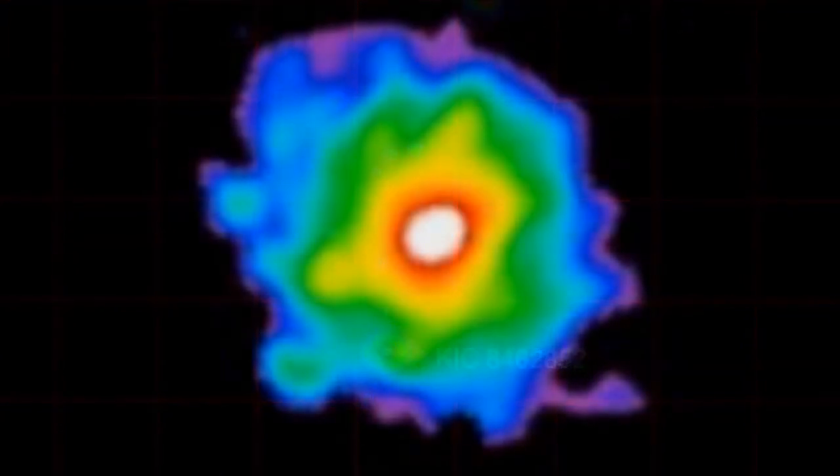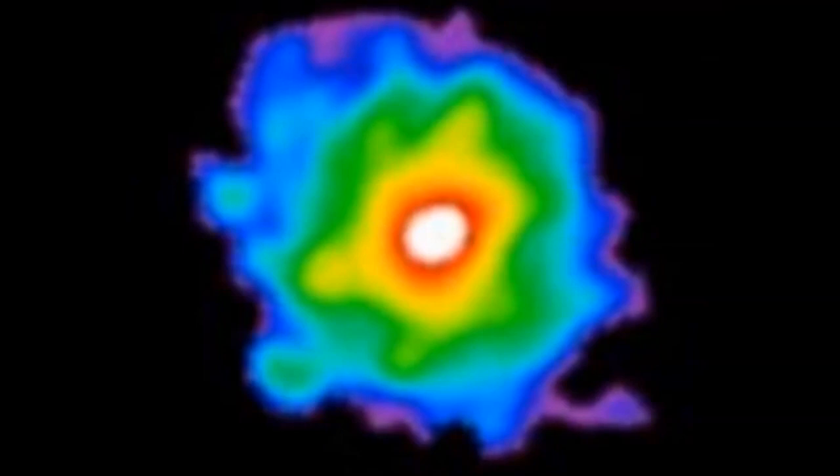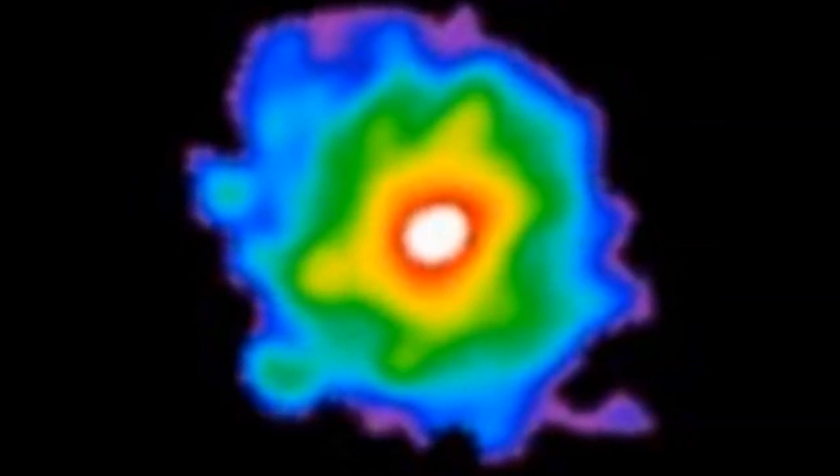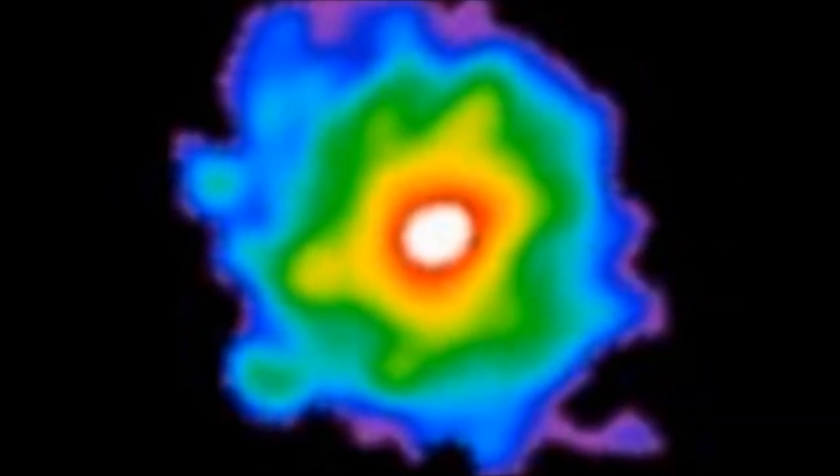Now researchers say they cannot explain strange fluctuations in the light it emits, leading some to claim it could have a huge alien megastructure in front of it.